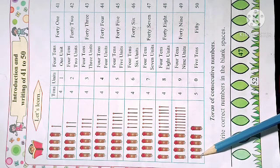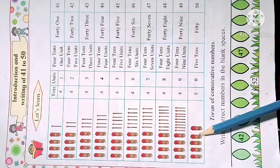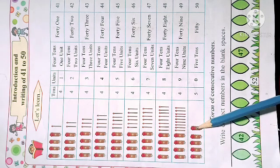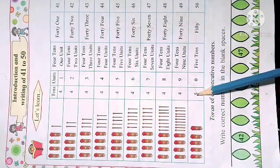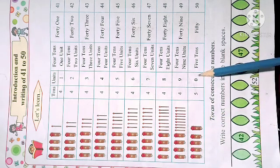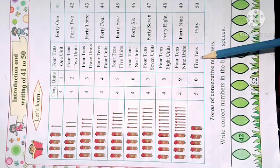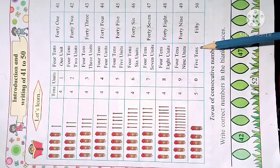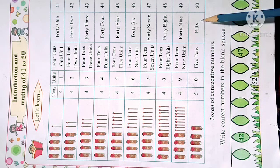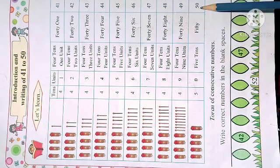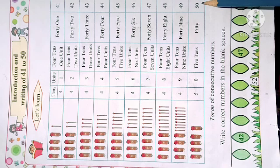And one, two, three, four and five — five tens and zero units. Five tens means fifty: 50.